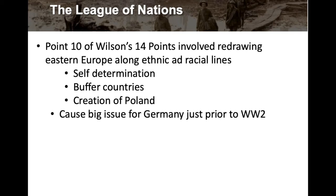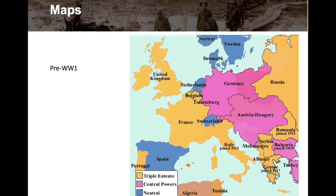The creation of Poland was a big issue because Poland would need a seaport — and giving that seaport to Poland would divide part of Germany. Looking at the pre-World War I map, you can see the United Kingdom, France, Russia, and the Central Powers — Germany, Austria-Hungary, and Turkey. Italy was technically part of the Triple Alliance but joined the Allies later in the war and wasn't too involved except perhaps up in the Alps.